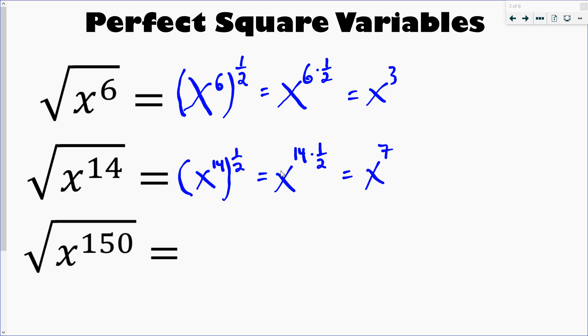Now in practice I would never write these steps, you just got to think of it. And the key is that a variable is a perfect square if it has an even exponent, so that exponent is divisible by 2. You can take the square root of the entire thing and all you're doing is dividing the exponent by 2. So the square root of x to the 150, very straightforward, what's 150 divided by 2? It's 75, so the square root of x to the 150 is x to the 75.